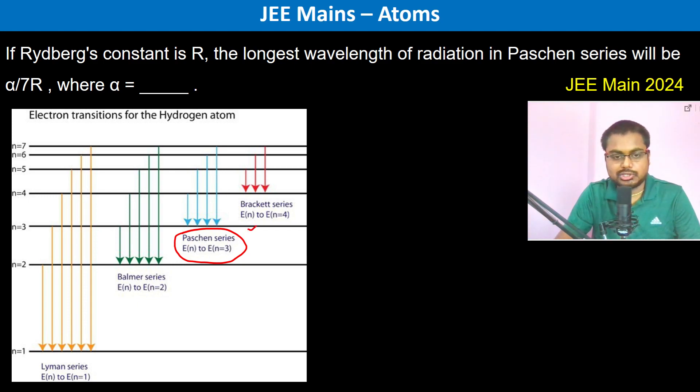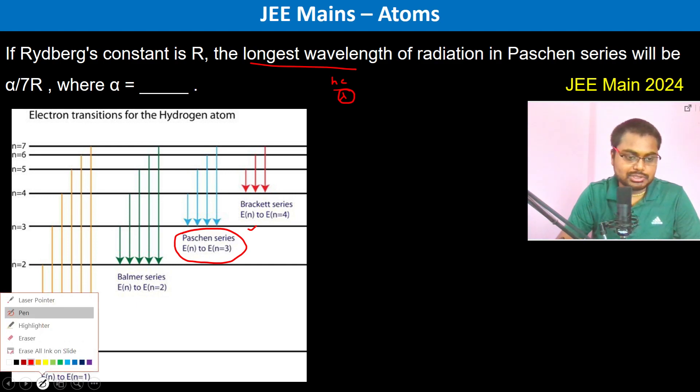Here is mentioned longest wavelength. Now, longest wavelength - energy is actually hc by lambda, so long wavelength means less energy. The least energy will be in Paschen series.